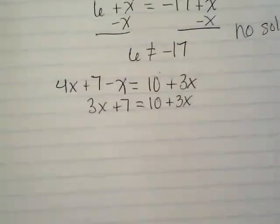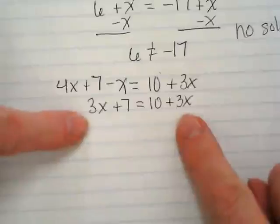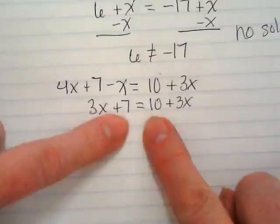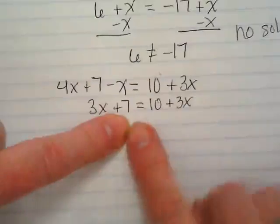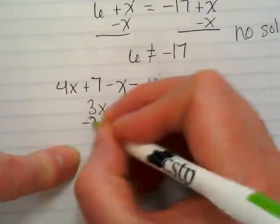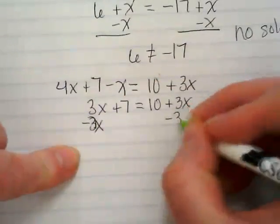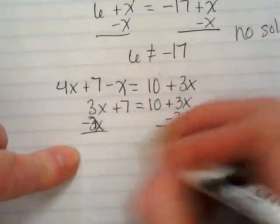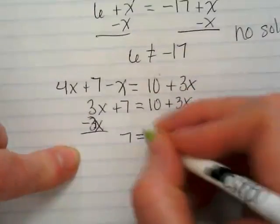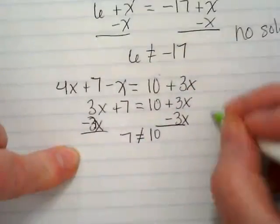4x and negative x. And that's going to simplify to 3x plus 7 equals 10 plus 3x. I've already heard somebody say they think this is going to be a no solution. Why? These terms are the same, and these terms are not the same. So it's not equal to each other. But let's just verify. Let's get rid of this 3x. If we do it to one side, we have to do it to the other. And we end up with 7 equals 10, which is not true. So no solutions.